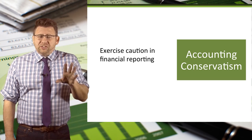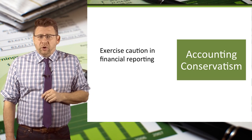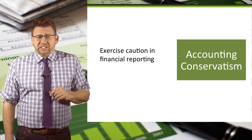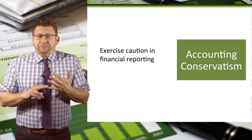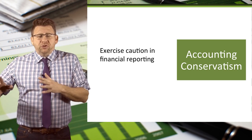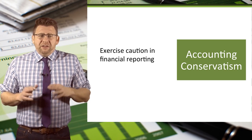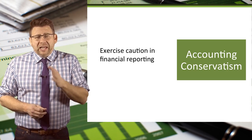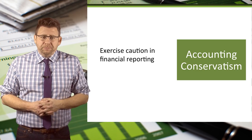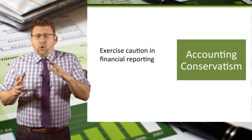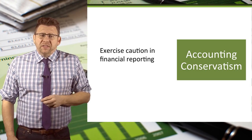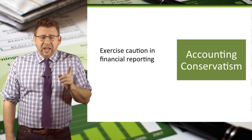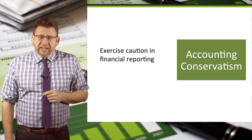Conservatism in accounting means exercising caution in reporting items in the financial statement. Examples of accounting conservatism are reporting all probable future losses, but not future gains. If in doubt, record an asset at its lowest reasonable amount and a liability at the highest reasonable amount. When there is a question, record an expense rather than an asset. The goal of conservatism is to report realistic and not overly optimistic financial data.